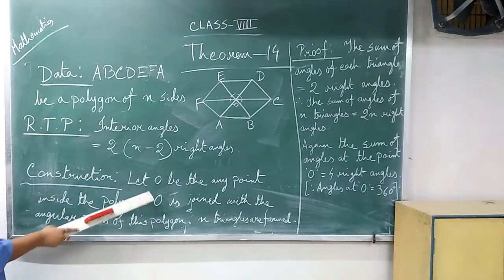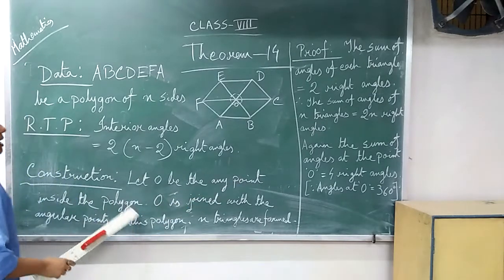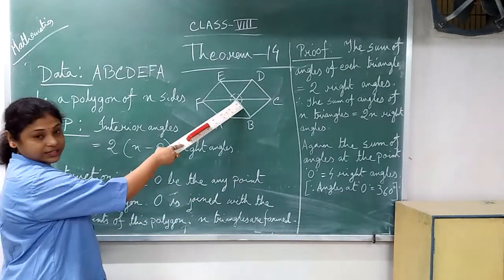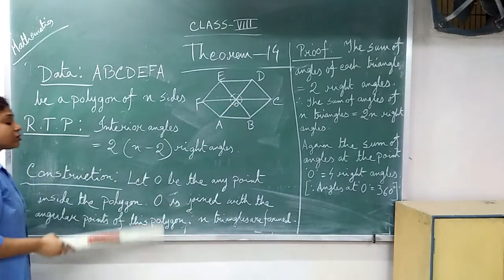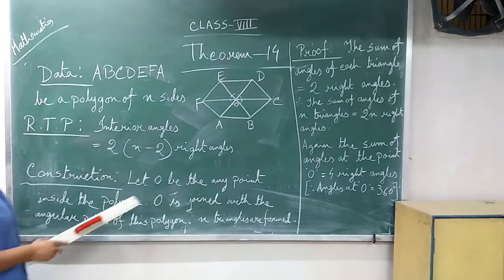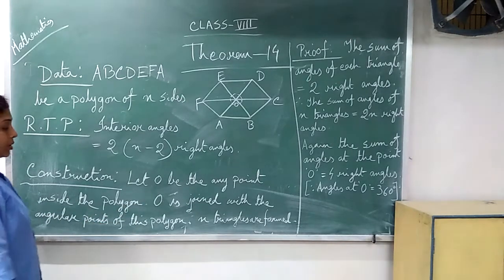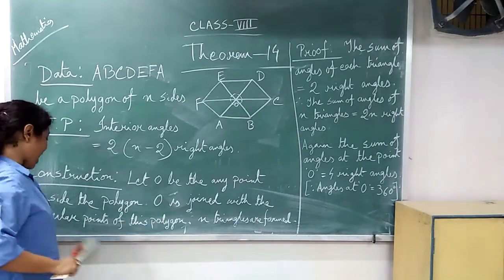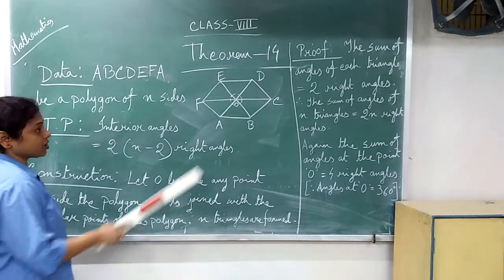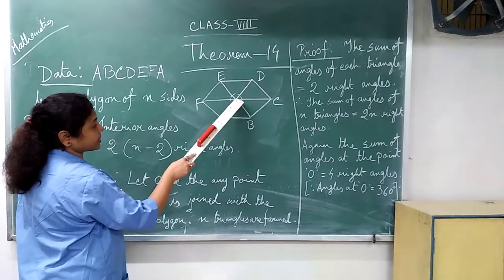Construction: Let O be any point inside the polygon. Here I have taken at the center middle point. O is joined with the angular points of this polygon. That means you will join like this.